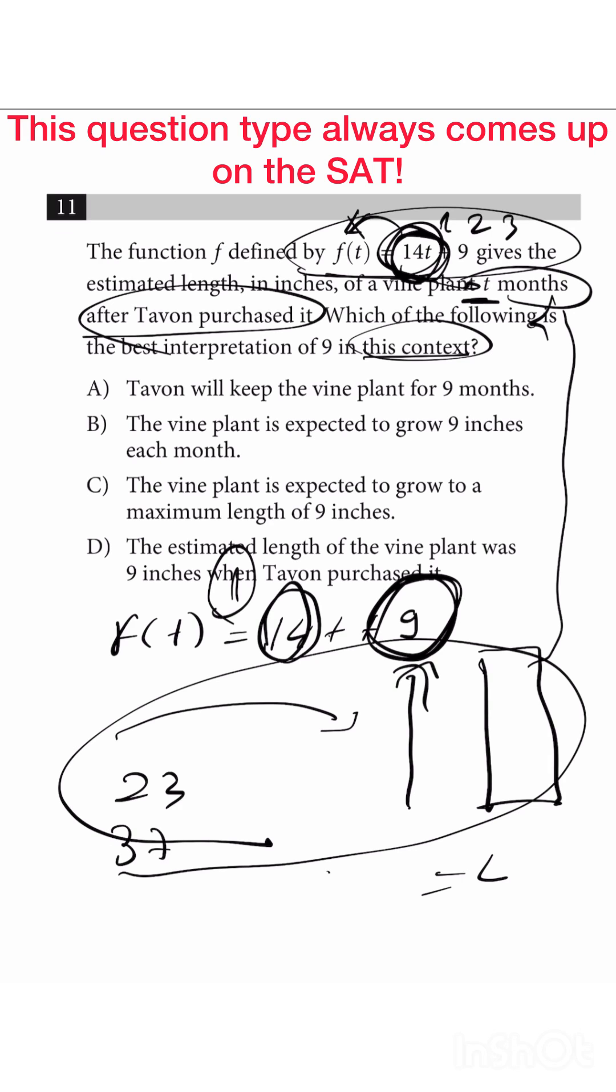Because the nine here represents how tall the plant is when you buy it, okay? So it's already nine centimeters, right? But as months go by, it's going to keep growing. So the nine here actually represents how long in length was this plant when I bought it, okay?